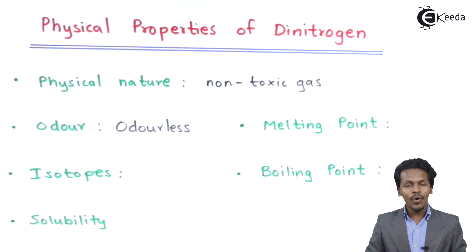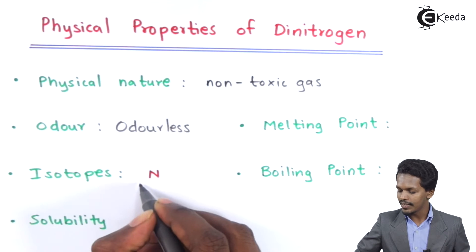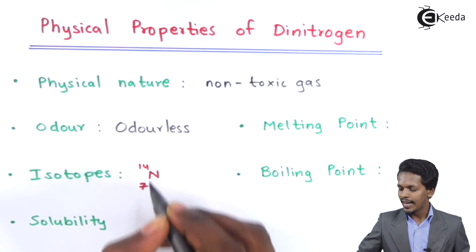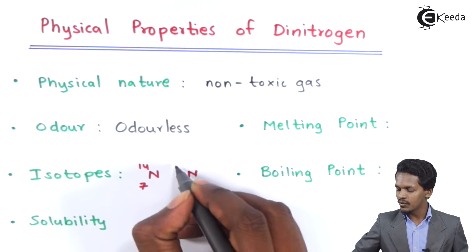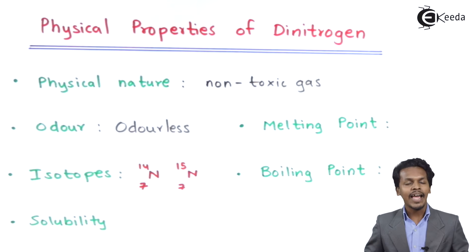Talking about the isotopes, it has been found that dinitrogen has basically two stable isotopes, and that is what I'm going to talk about here. That is having an atomic mass of 14 and having an atomic mass of 15. So therefore these are the two stable isotopes of nitrogen.